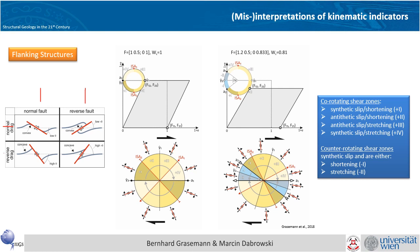And the second row gives you a structure with a reverse drag, where the marker line deflection is opposite to what would be expected from the shear sense. Let's look at the behavior of such slip surfaces in ductile flow, focusing first on simple shear in this left column.